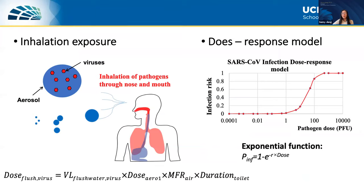The inhalation exposure model expresses the dose of viruses entering your lungs, determined by the concentration of viruses in the flushing water, the aerosols generated by toilet flushing, and how you breathe — whether you are an oral or nasal breather, and whether you are at rest or excited, since breathing rate and volume affect your total dose of exposure.